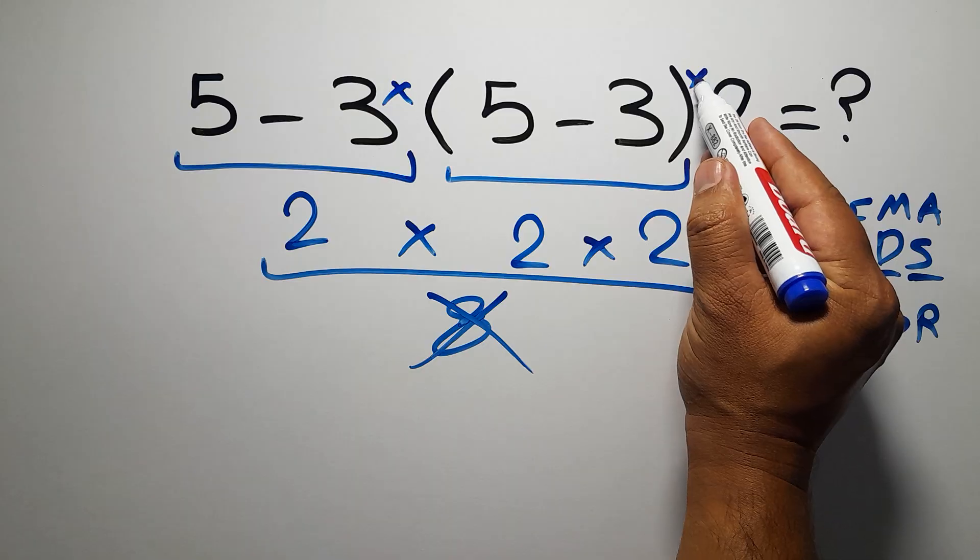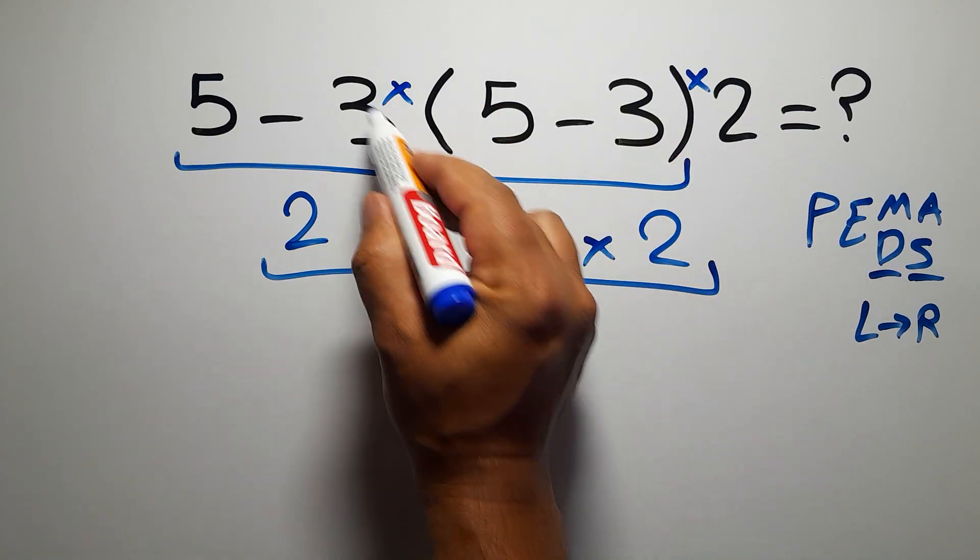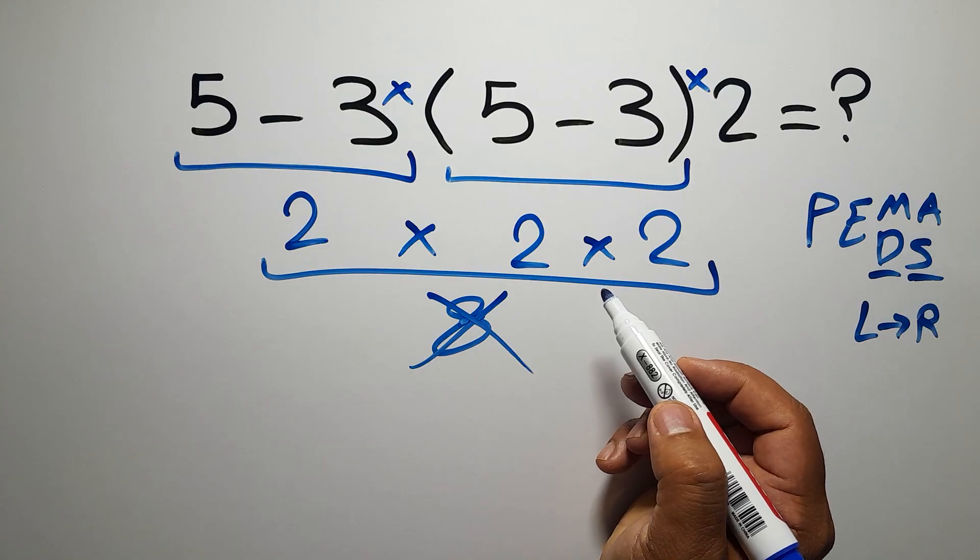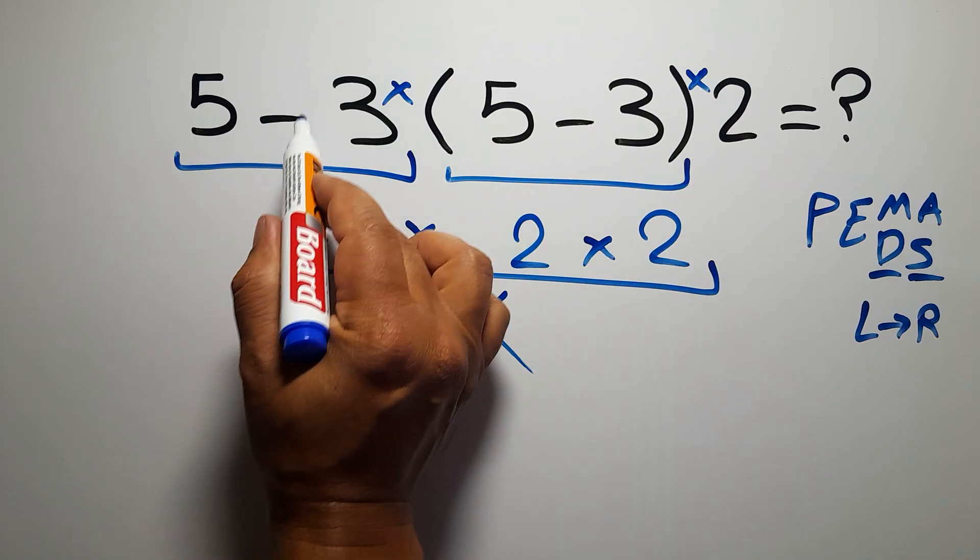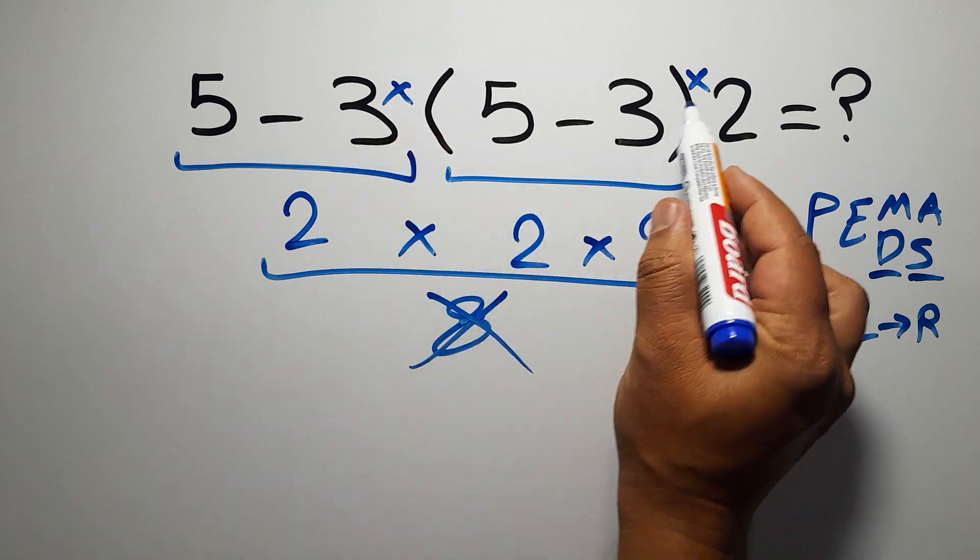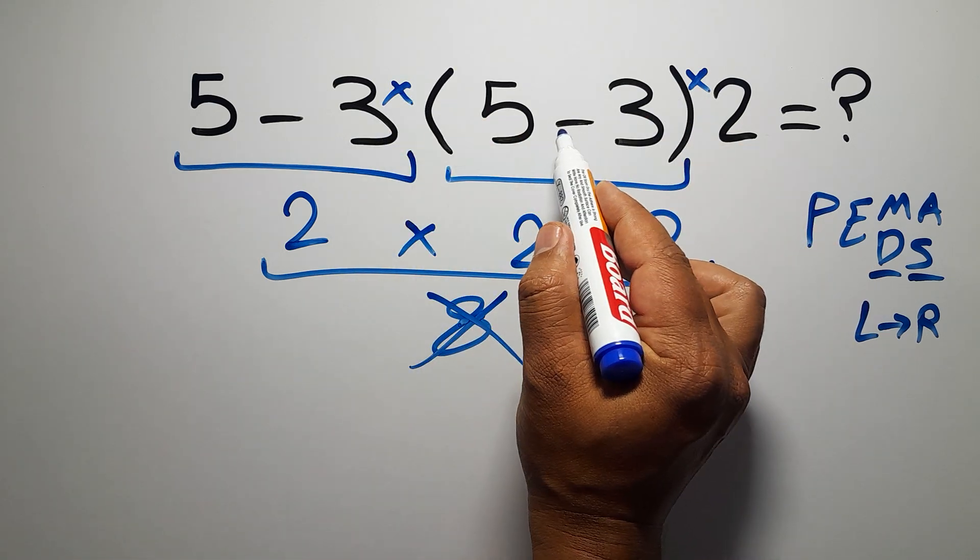Because in mathematics, when a number is placed next to parentheses it means multiplication, and we usually don't write the multiplication sign for brevity. Okay, so we have one subtraction, two multiplications, and this parentheses. Inside this parentheses we have one subtraction.